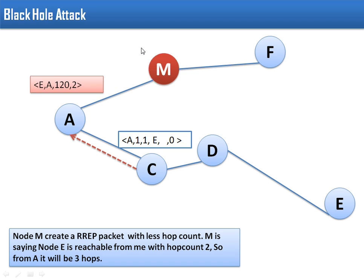And M will send this packet to A. So when A receives this packet, A will conclude that node E is reachable via M with hop count 3, and A will store this information.